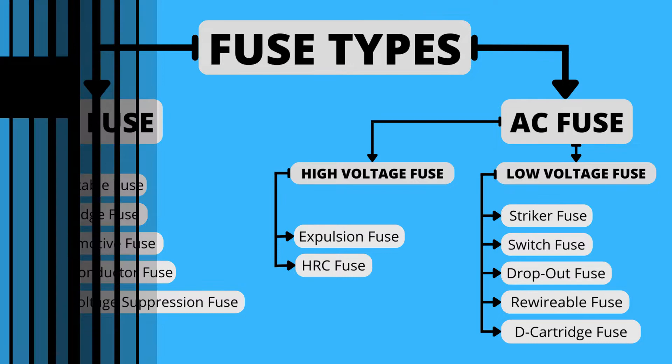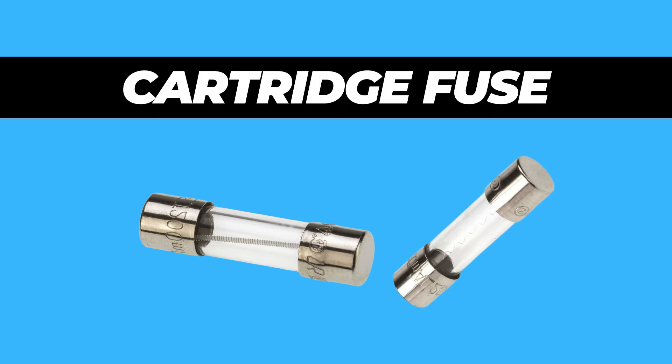Cartridge fuses are the type of electrical fuses that have the strip and arc extinguishing elements completely enclosed in a ceramic or transparent glass body.